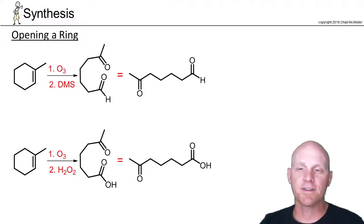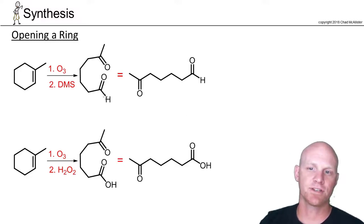The last way I want to look at is opening up a ring. This is still accomplished through oxidative cleavage, and generally you're more likely to have an alkene than an alkyne in a ring. You'd have to have a much larger ring to fit an alkyne with the bond angles being 180 degrees. We'll focus on the alkene here, and again we can do this under oxidizing conditions or under reducing conditions. DMS here stands for dimethyl sulfide.